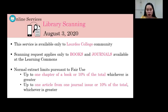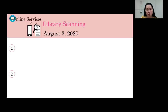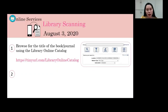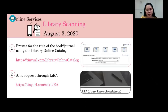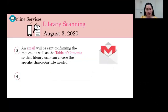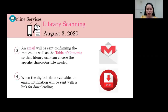To avail of the library scanning service: First, browse for the title of the book or journal using the library online catalog. Second, send a request through Lira. Third, an email will be sent confirming the request as well as the table of contents, so that the library user can choose the specific chapter or article needed. Fourth, when the digital file is available, an email notification will be sent with a link for downloading.